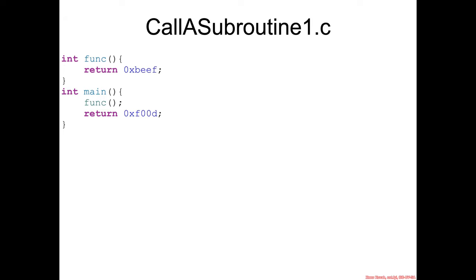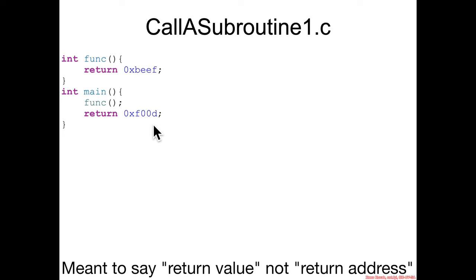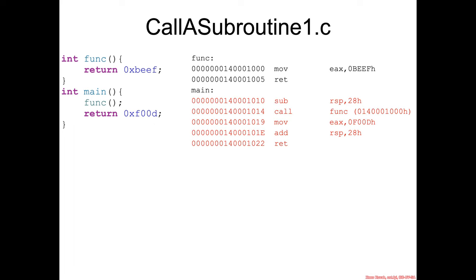We're now going to get into the heart of the class, which is looking at very simple C code and seeing the assembly instructions that it generates. Here we have something utterly trivial: main calls a function, the function just returns a hard-coded constant, we don't do anything with the return value, and main returns some other hard-coded constant. Here's the assembly, and it looks like we have five completely new assembly instructions that we need to learn about.